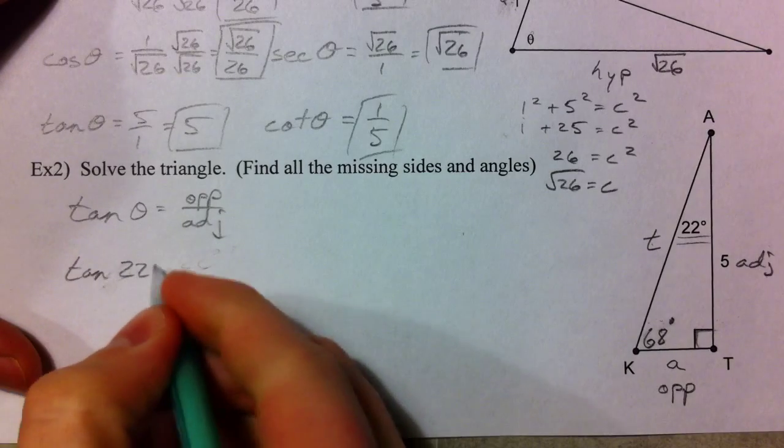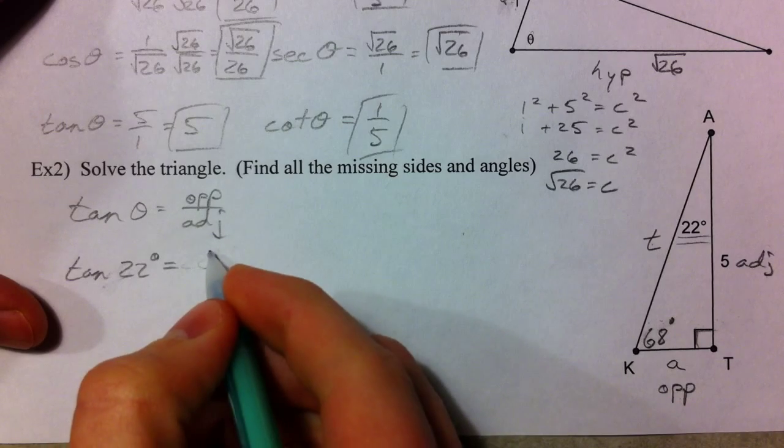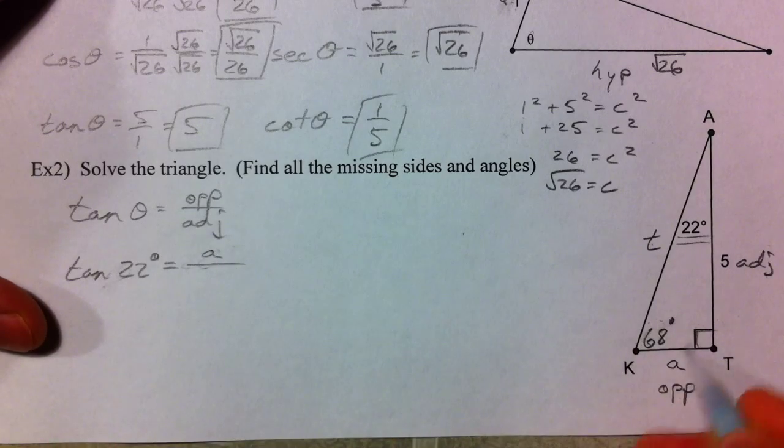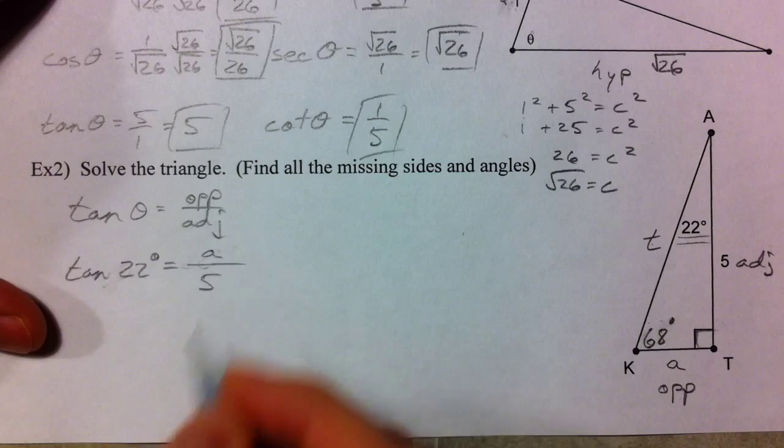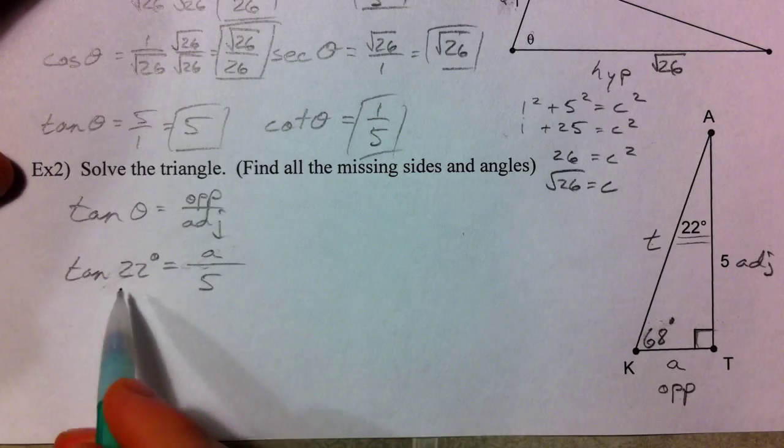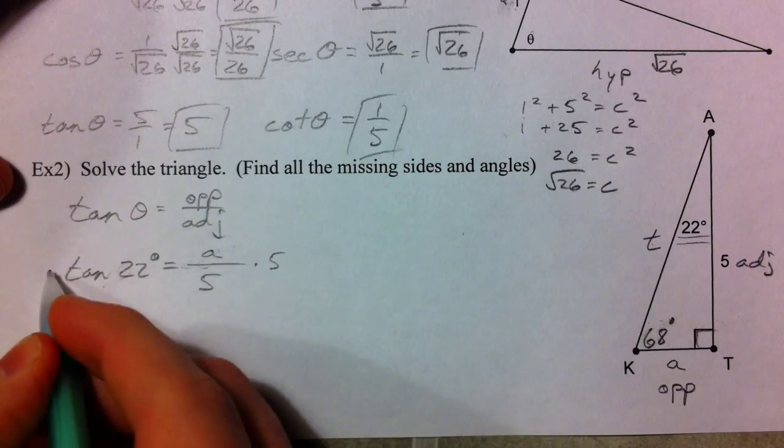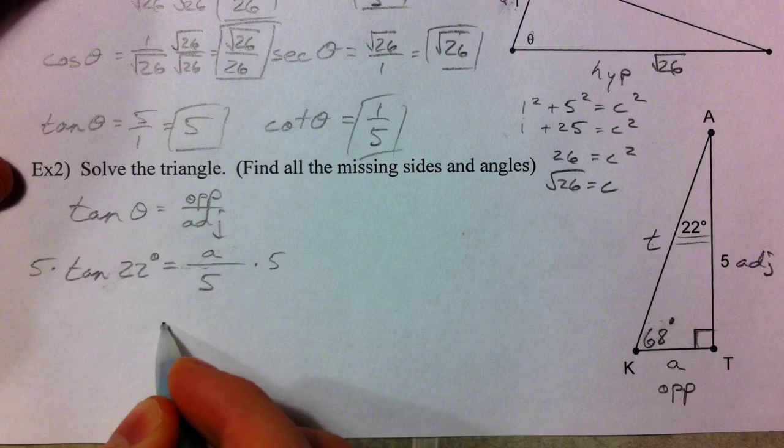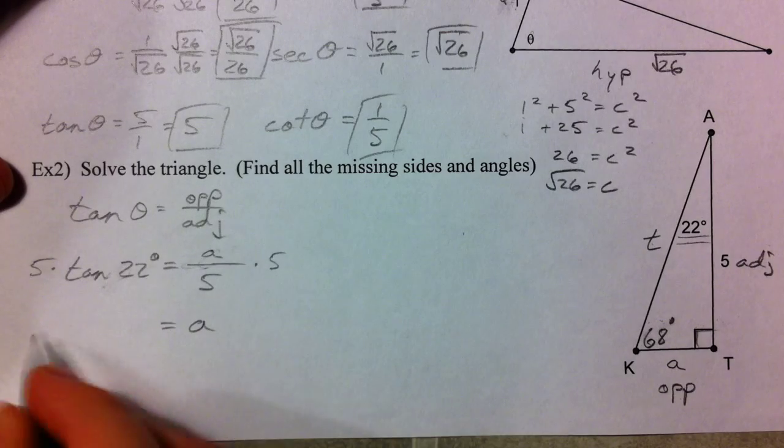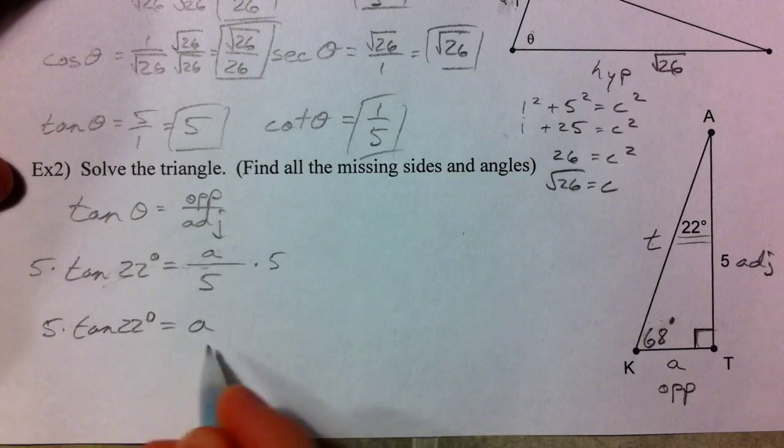Tangent of 22 degrees is the opposite over the adjacent. So our opposite, I don't know what that is, that's A, divided by our adjacent, which is 5. We're trying to solve this for A. So we just set up our ratio with what we know. Let's multiply both sides by 5. Cancel out the divided by 5. And so 5 times the tangent of 22 degrees is A.